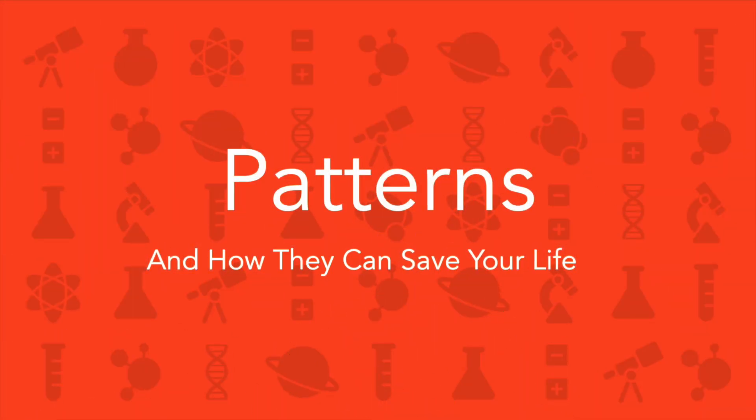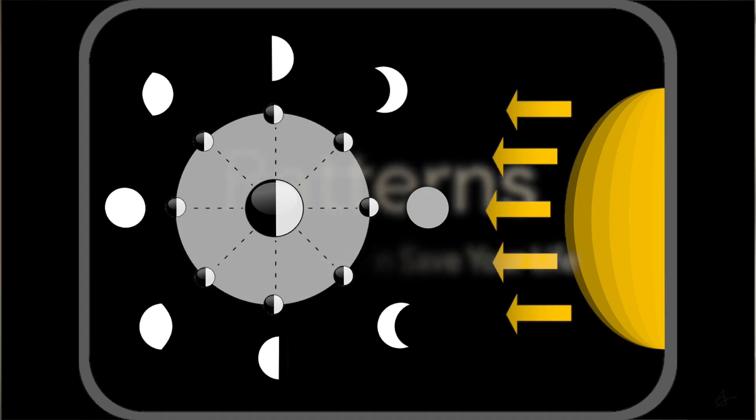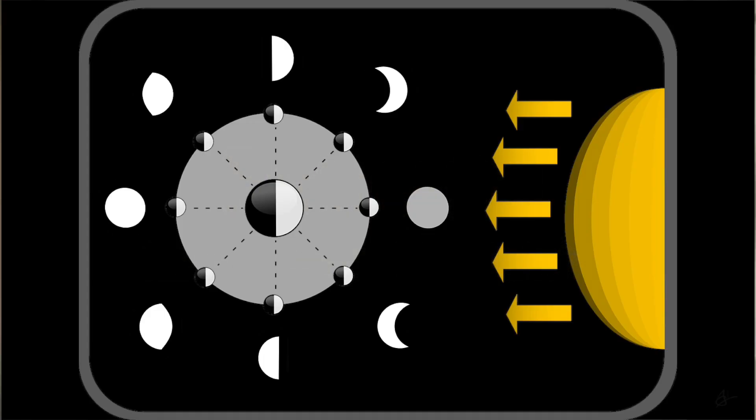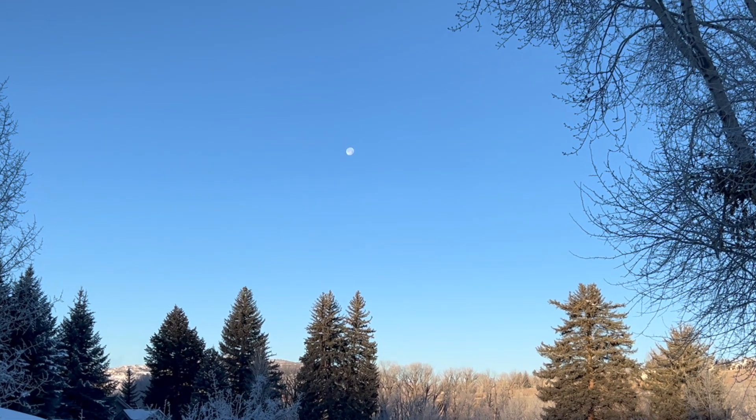And now for the real next level of the moon phases, the patterns. The moon's phases are not random. Where you find the moon in the sky is not random. When it rises and sets, not random. So if you really understand them, you can use the moon phases like a clock or a calendar. Let's take a look.